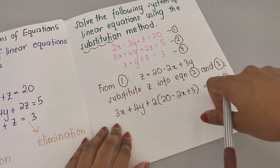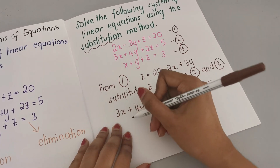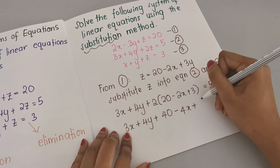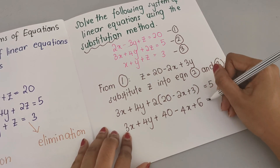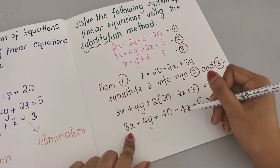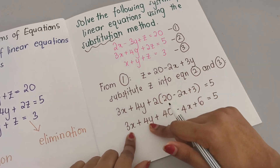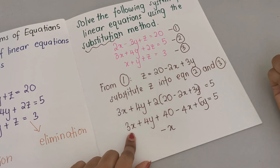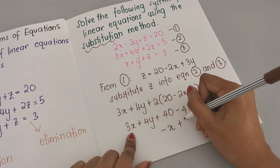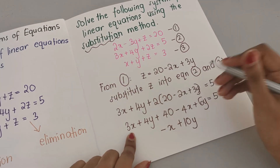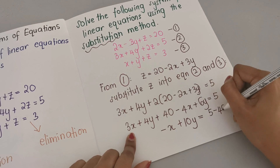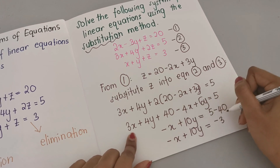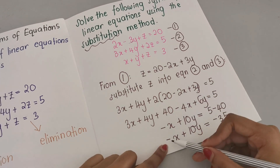Expanding, there is no z remaining — only x and y. We get 3x plus 4y plus 40 minus 4x plus 6y equals 5. Simplifying: 3x minus 4x is negative x, and 4y plus 6y is 10y. Bringing 40 over gives negative x plus 10y equals 5 minus 40, which is negative 35.